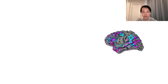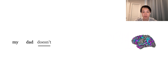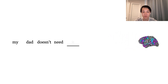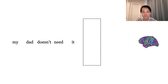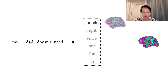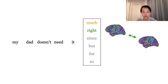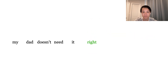Then, when we get new brain recordings from the user, we can decode them by inverting our encoding model. To do this, we use a language model, like GPT, to build sequences of words, and we use our encoding model to choose words that are likely to have evoked the recorded brain responses.